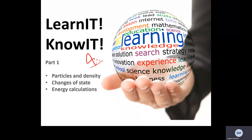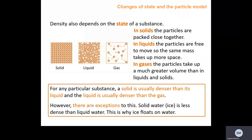We're going to look at particles, density, change of state, and energy calculations. We've got three states of matter: solids, liquids, and gases. When we go from a solid to a liquid, we increase the kinetic energy of the particles so they vibrate more. Solids vibrate around a fixed point, liquids have enough kinetic energy to move over each other, and gases have so much kinetic energy they fill their container.